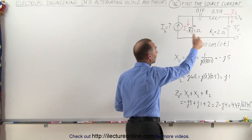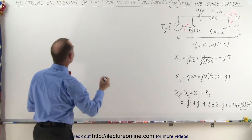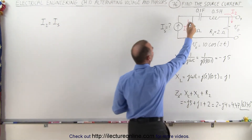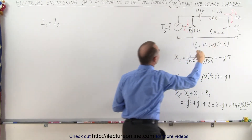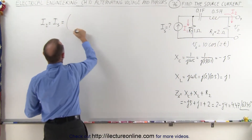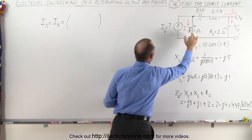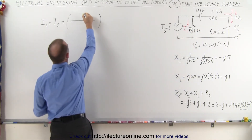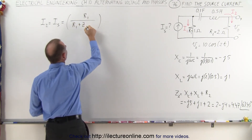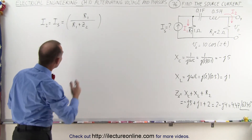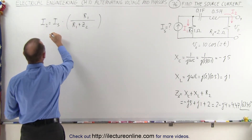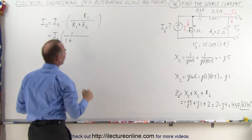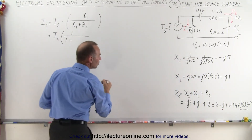So now we have the impedance in that branch. We're going to say that I2 is equal to the source current coming into this branch point. The part of the current that goes in here will depend upon the ratio of the impedance in the other branch. So we write it as Is times R1 divided by R1 plus Z2. This is Is times 1 divided by 1 plus the quantity 2 minus j4.